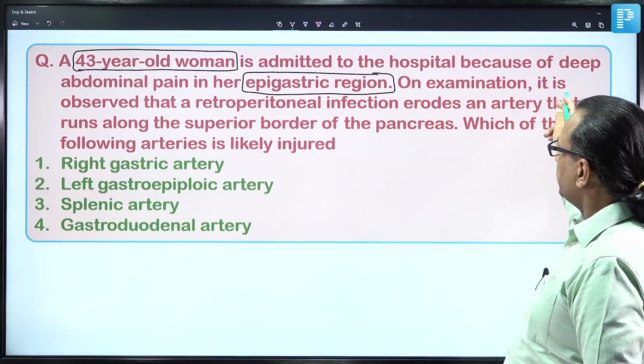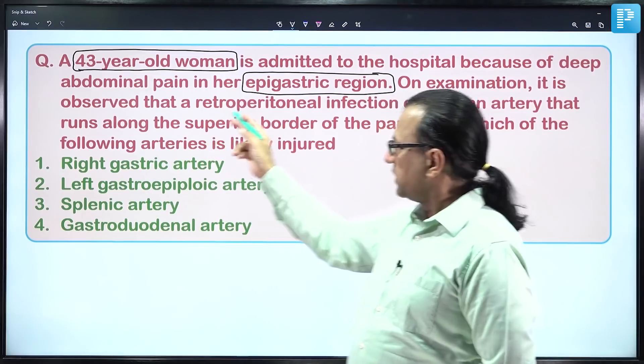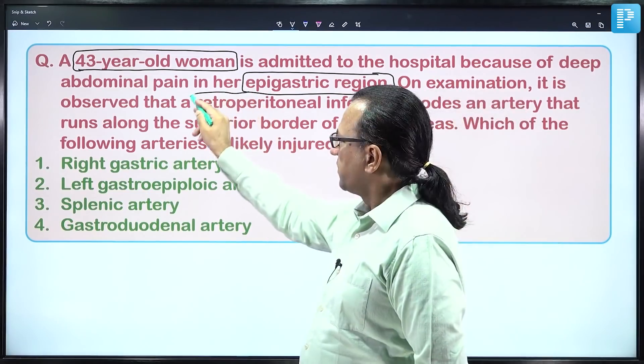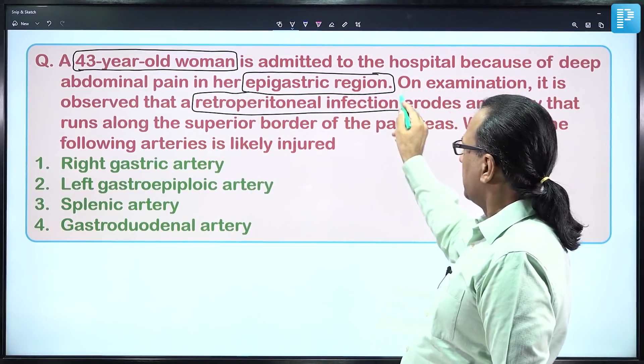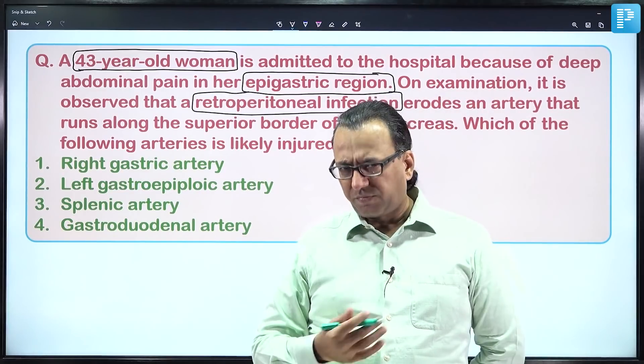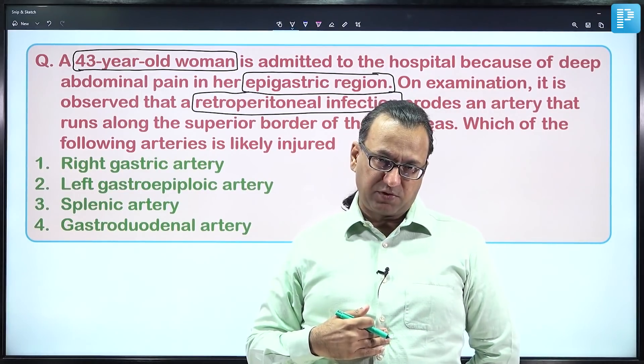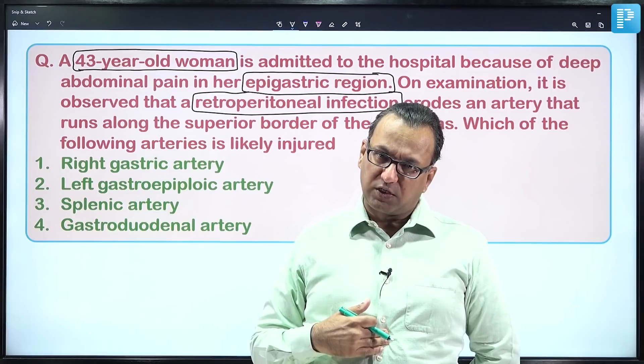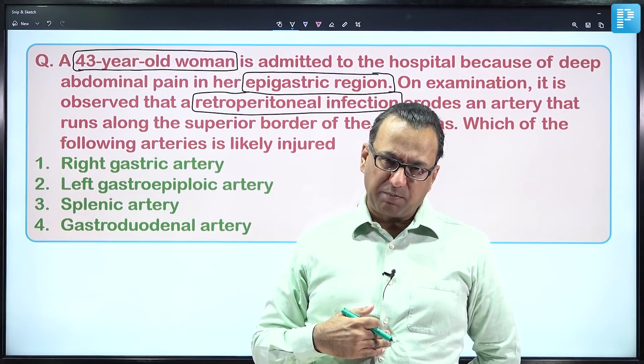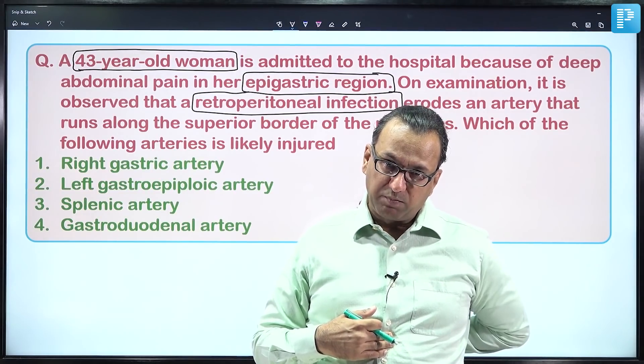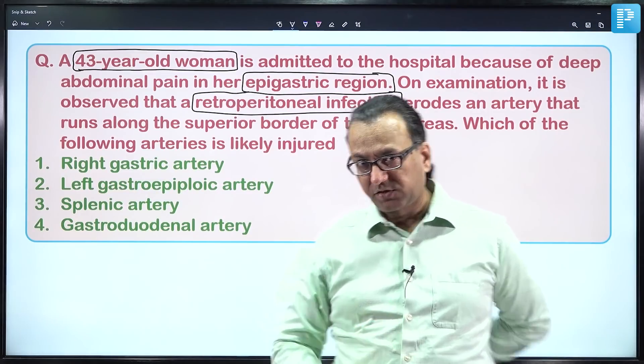On examination, there was a retroperitoneal infection. Retroperitoneal structures like the pancreas can cause referred pain in the epigastrium. The pancreas is a foregut derivative, though pain from it is typically felt more in the back than the epigastrium.